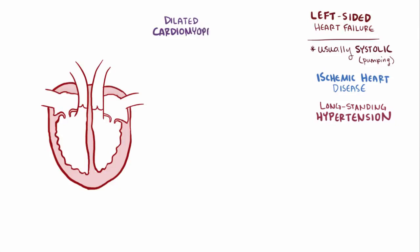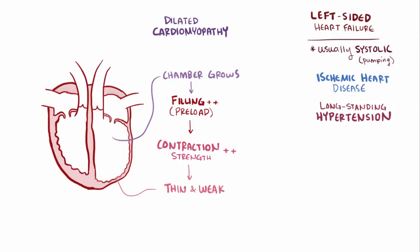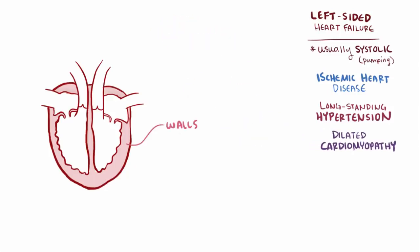Another potential cause would be dilated cardiomyopathy, where the heart chamber dilates or grows in size in an attempt to fill up the ventricle with larger and larger volumes of blood — or preload — and stretch out the muscle walls to increase contraction strength via the Frank-Starling mechanism. Even though this can work for a little while, over time the muscle walls get thinner and weaker, eventually leading to muscles so thinned out that it causes systolic left-sided heart failure. Ultimately, the ventricular walls need to be the right size relative to the size of the chamber for the heart to work effectively, and any major deviation from that can lead to heart failure.